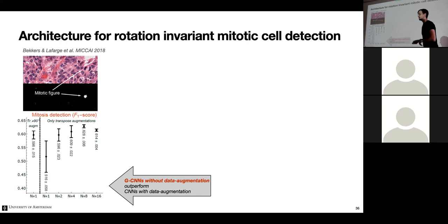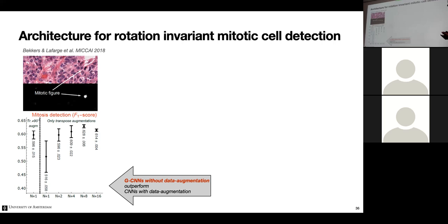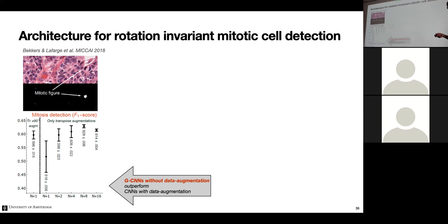Group convolutions outperform data augmentation for two reasons: first, the learnable parameters don't need to be spent on learning geometric transformations; second, GCNNs are more expressive — they can represent patterns of orientations and positions relative to each other, whereas 2D CNNs can only detect spatial patterns. Also, data augmentation is a global transformation, while group convolutions detect local deformations. There's no need for data augmentation for transformations already in the group — though other augmentations like color perturbations remain relevant.